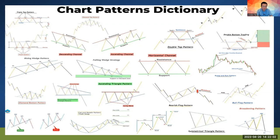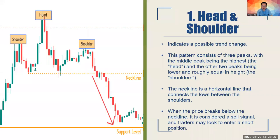First up is the head and shoulders pattern, which indicates a possible trend change or reversal. This pattern consists of three peaks: a shoulder on each side and the head at the top as the highest peak. It's very important to also identify the neckline — the horizontal line that connects the lows between the shoulders.